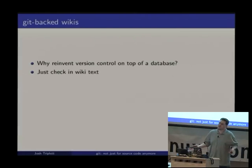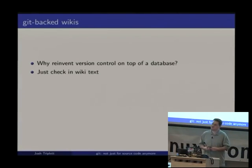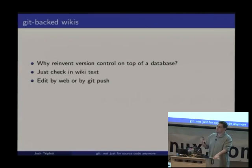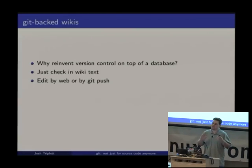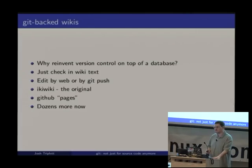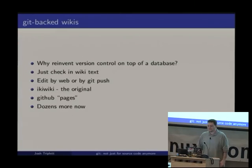Another fun one is Git-backed wikis. If you're building version control effectively, why do it on top of a database rather than a version control system? MediaWiki actually builds version control on top of SQL. Just check your wiki text into a Git repository instead. For free, you get the ability to edit by Git push — just push new content to the wiki and have it render from a hook. The original example of this was Ikiwiki, which inspired quite a few more, including GitHub Pages, probably the most popular at this point.